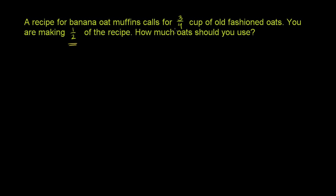So if the whole recipe requires 3/4 of a cup, and you're making half of the recipe, you want half of 3/4, right? You want half of the number of old-fashioned oats as the whole recipe. So you want 1/2 of 3/4.